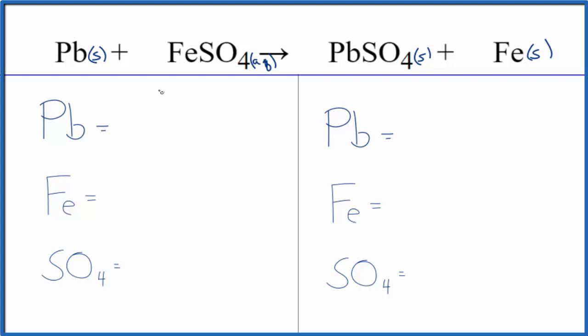If you're going to balance the equation, you have one lead, one iron, and then we'll count this SO4 here. This is the sulfate ion, it's on both sides. We're just going to count that as one thing, so we have one sulfate. Product side, one lead, one iron, and one sulfate. So it's already balanced.